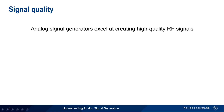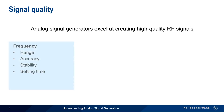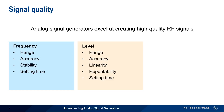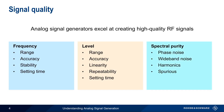If there's one thing that analog signal generators excel at, it's creating high-quality RF signals. Signal quality can be divided into three performance areas. The first has to do with frequency and includes things such as accuracy and stability. The next area is level performance, where linearity and repeatability are important concerns. And last but certainly not least, we have spectral purity. Both phase and wideband noise, as well as the suppression of harmonics and spurious signals, are key components in spectral purity. It bears repeating that if we want high-quality RF signals, analog signal generators are often the best choice.